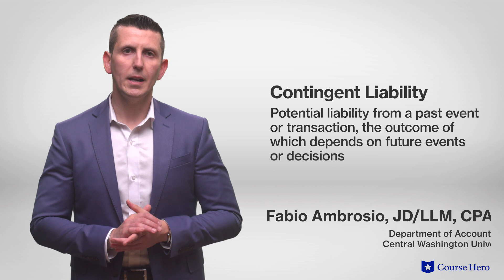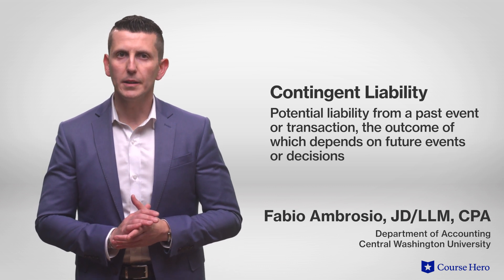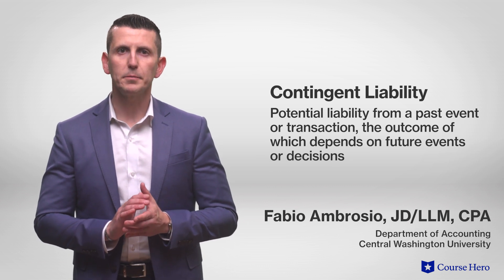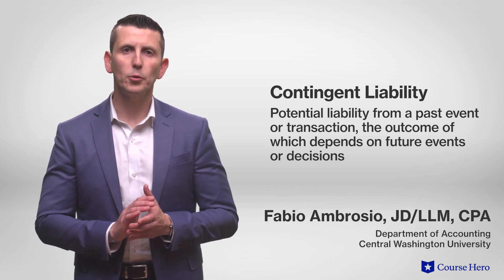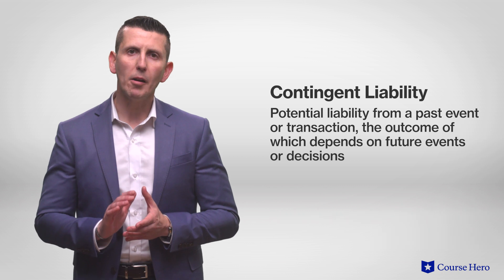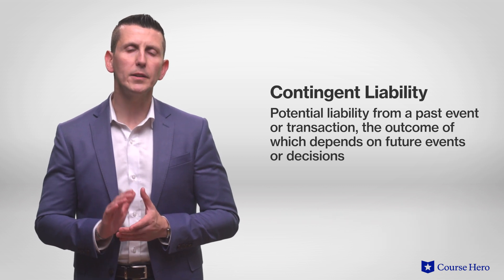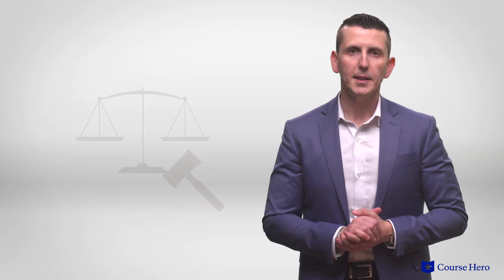A contingent liability is a potential liability arising from a past event or transaction, but its outcome is dependent on a future event or decision. A typical example is a pending lawsuit, which arises from something the company has done in the past but could result in a liability in the future depending on the outcome of the lawsuit.